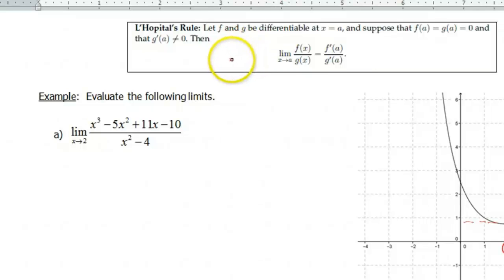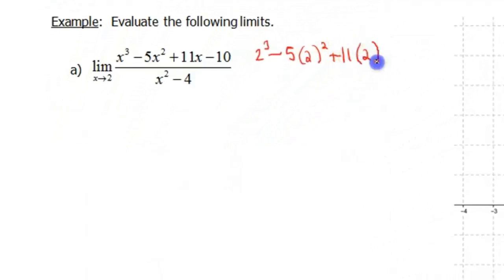So now we've gotta go through and check our conditions here to see if we can use L'Hopital's rule and if it does actually make sense. If we were to plug 2 into this function, let's look at the numerator and denominator separately. If we were to plug 2 in, we'd end up with 2 cubed minus 5 times 2 squared plus 11 times 2 minus 10. Remember, to be able to use L'Hopital's rule, we need to have that f of a, which in this case is f of 2, our numerator function evaluated at 2, has to give us 0. Otherwise we can't use this.